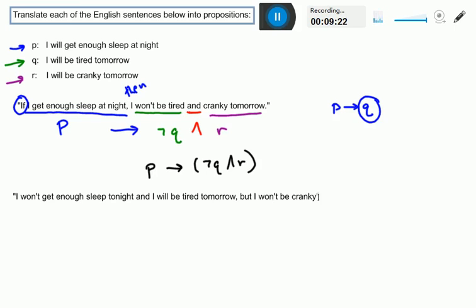So looking at this last example here, I won't get enough sleep at night and I will be tired tomorrow, but I won't be cranky. Now the word but is not one of the basic logical connectives that we use, the AND and the OR. But it is a conjunction which is an AND. BUT is another way to say AND. But we usually use the word BUT instead of AND if the thing that follows is sort of contrary to what you would expect. So this you really need to think about a BUT as an AND and then it becomes much easier to translate.